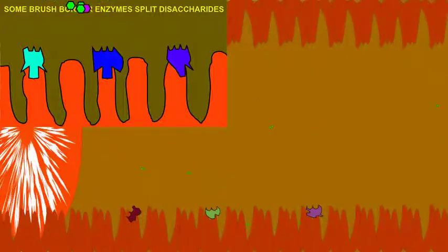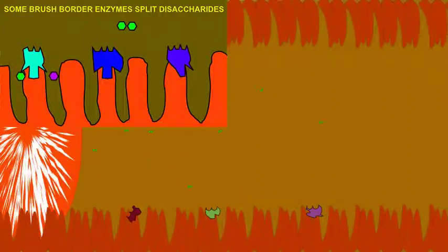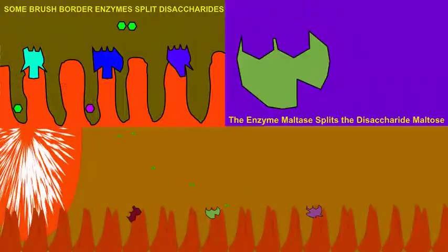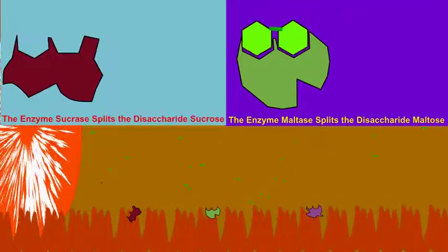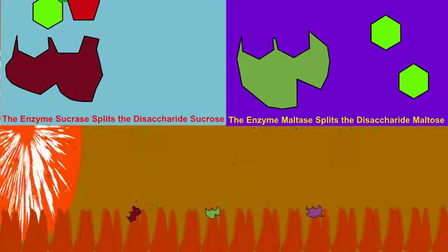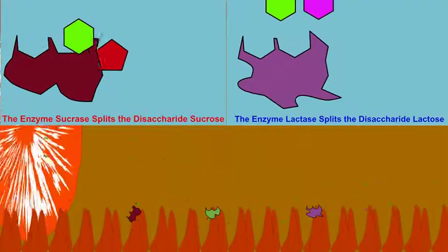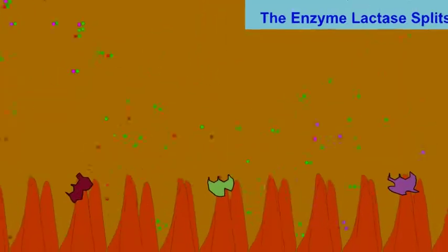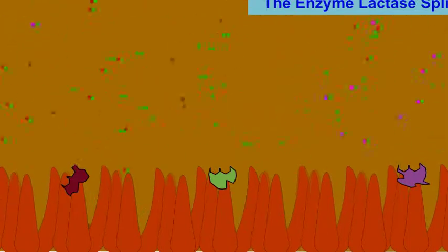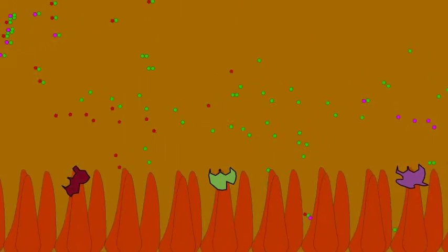The small intestinal cells include brush border enzymes which can digest disaccharides. The enzyme maltase can digest the disaccharide maltose. The enzyme sucrase can digest the disaccharide sucrose. The enzyme lactase can digest the disaccharide lactose. All of the smaller carbohydrates can then be separated into monosaccharides in the small intestine.